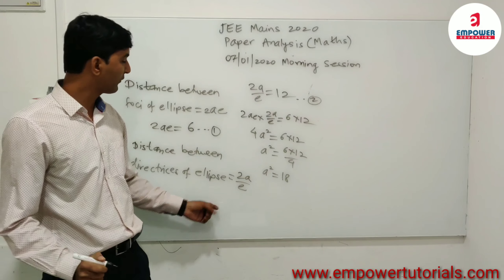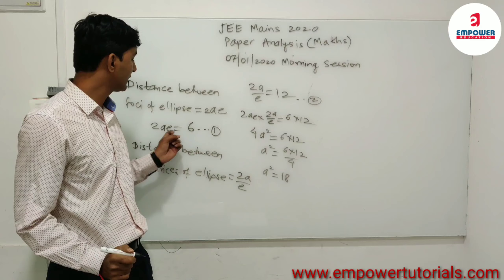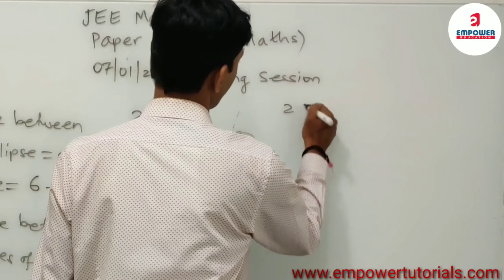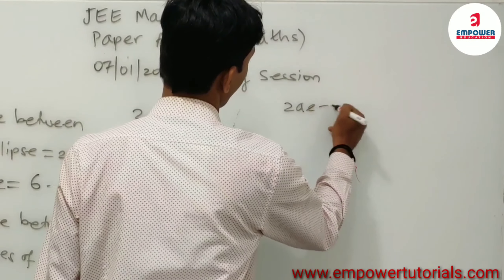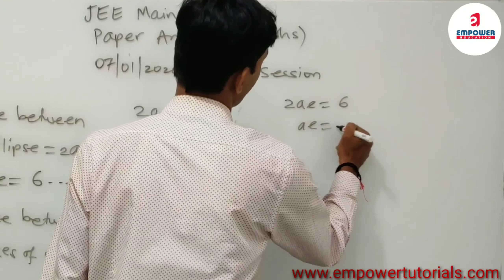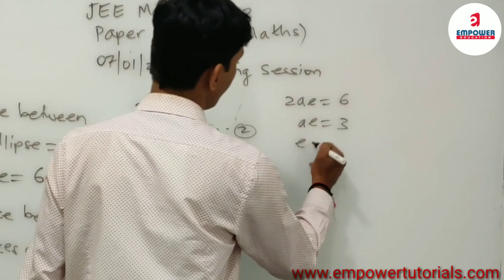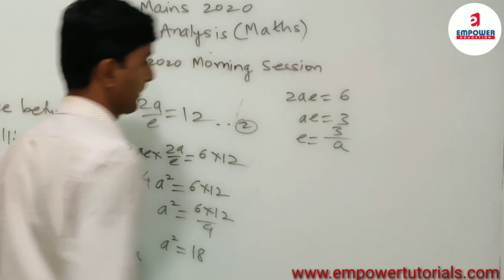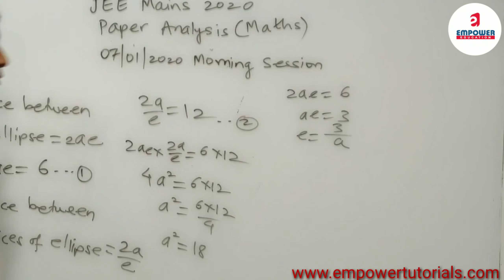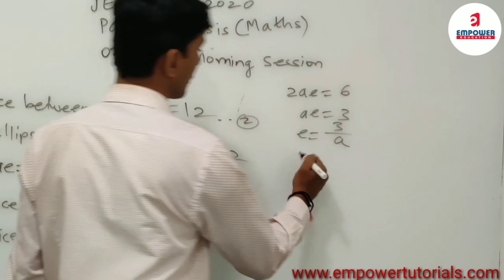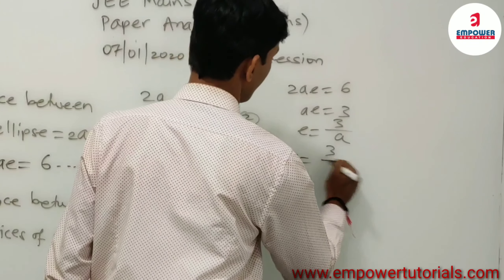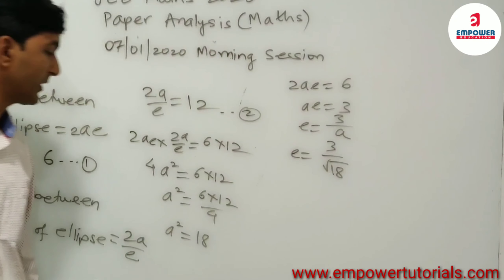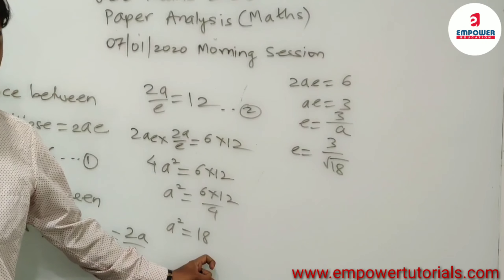Now we can find the eccentricity. From the first equation, 2Ae = 6, so Ae = 3, which means E = 3/A. Therefore E is equal to 3 upon √18. This is the value of E, and 18 is the value of A².